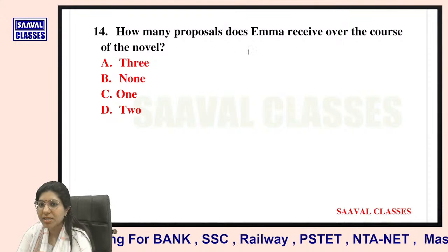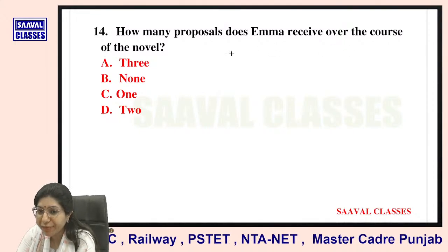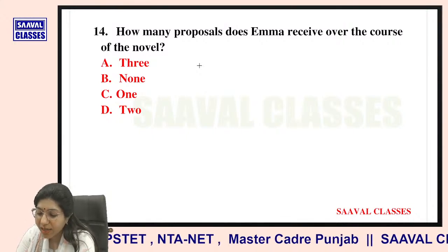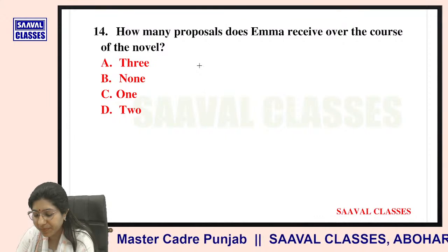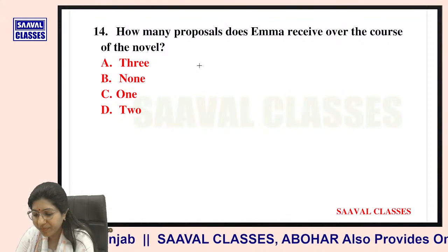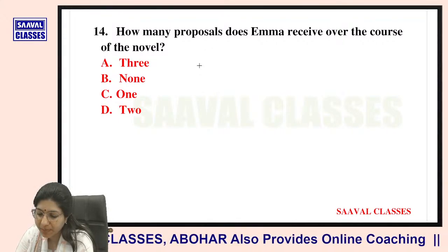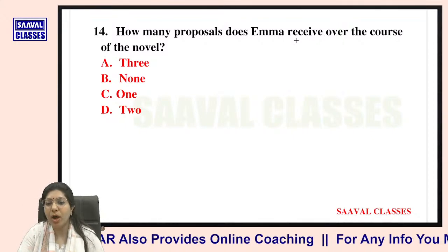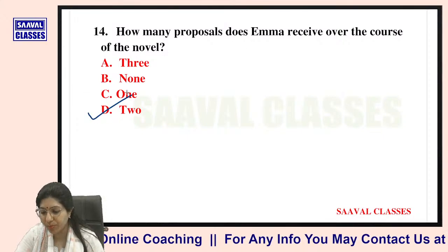Question number fourteen: How many proposals does Emma receive over the course of the novel? Options are one, two, three, or none. She gets two proposals.